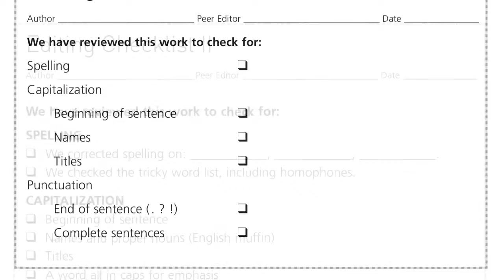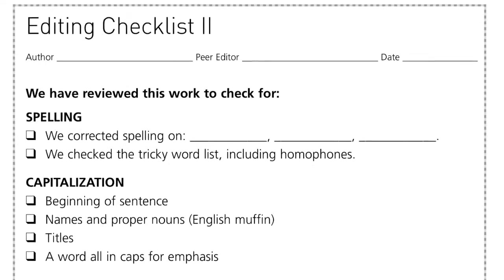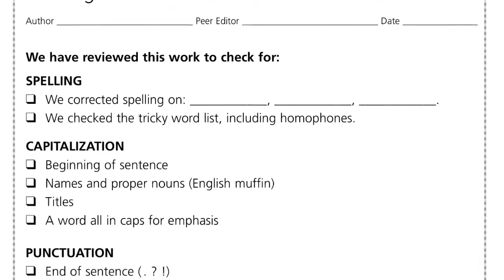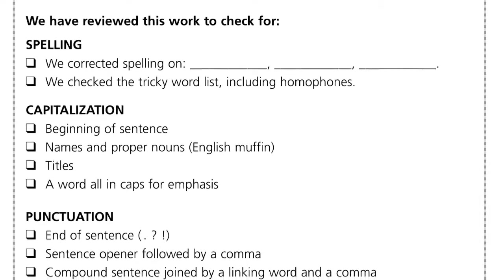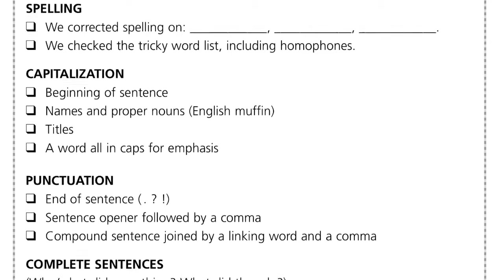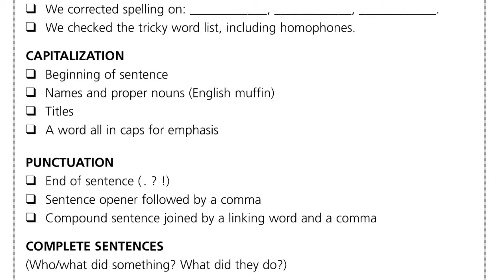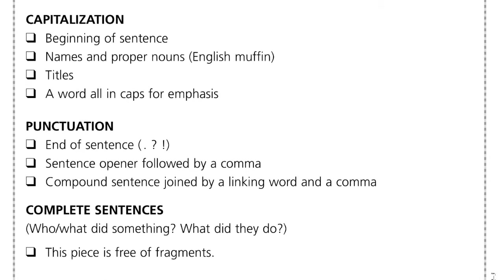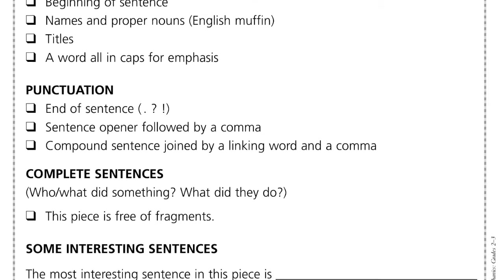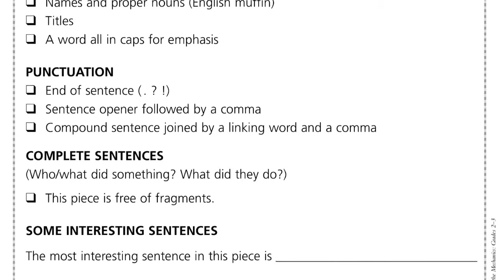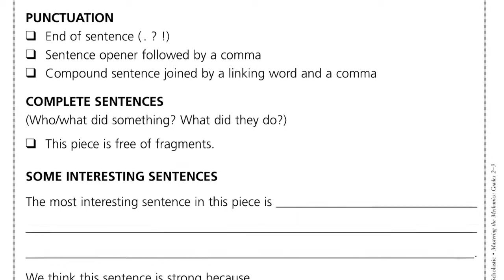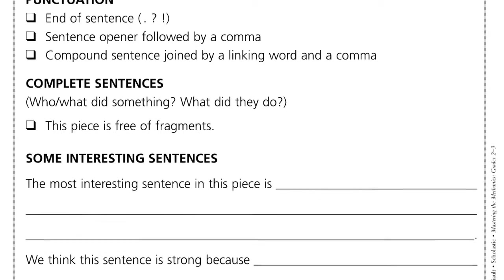Editing checklist number two can be used by the parent and the student again, checking for spelling, capitalisation, punctuation, complete sentences, and then some interesting sentences — so a reflection on some of the best work in the piece of writing.